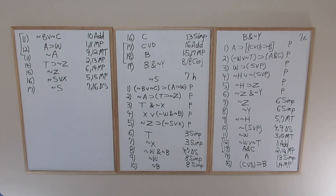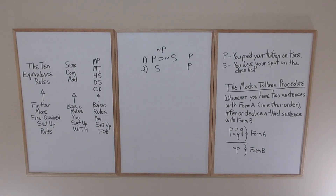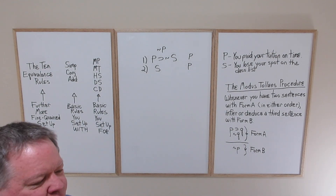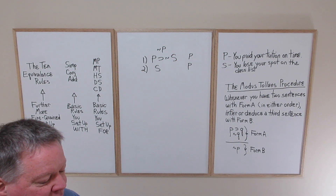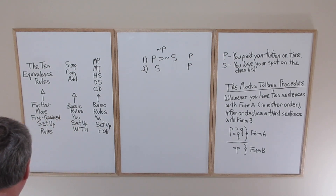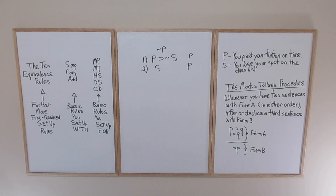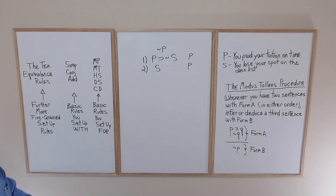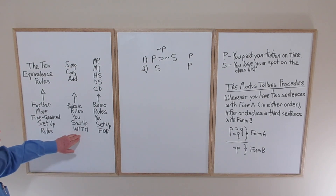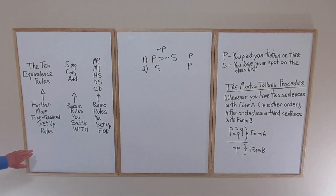I'll leave the remainder of the proof construction questions for you in question seven, the second part of assignment six. Now we can move on to assignment seven, which begins on page fourteen of the file. As far as logical rules go, we're about to substantially increase the number of rules we have to work with. We've still got the five basic rules you set up for — rules that involve combining multiple lines of information — and we're now going to consider the ten equivalence rules.